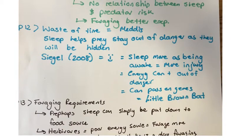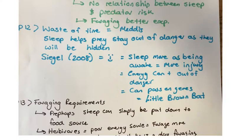In paragraph twelve, we look at the waste of time theory, previously suggested by Webb but developed by Meddis, who states that sleep helps prey stay out of danger as they will be hidden. Siegel in 2008 develops this further, stating that prey sleep more because being awake makes them more likely to be injured. So it's a trade-off between energy conservation and staying out of danger, allowing the species to survive longer. The example here is the little brown bat, which is most active when its predators are asleep and its prey is awake — enabling it to feed, reproduce, and continue the species.